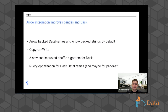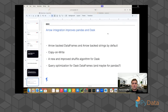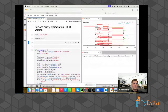Arrow strings are for pandas the biggest strength of Arrow at the moment — they are way more efficient than what pandas used in the past to represent string columns. Then we have copy-on-write, a new feature that will be enabled by default relatively early next year. Dask also built a new shuffle algorithm heavily based on Apache Arrow, and we are currently building a query optimizer for dask dataframes so that it can make your queries more efficient automatically.